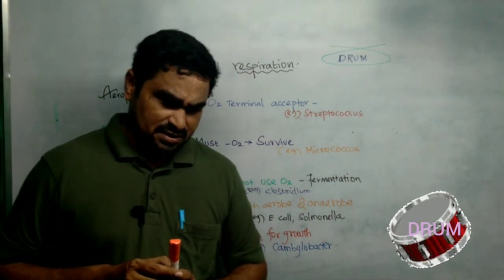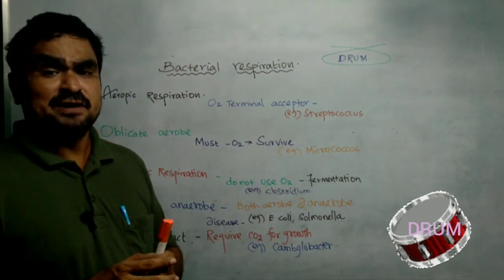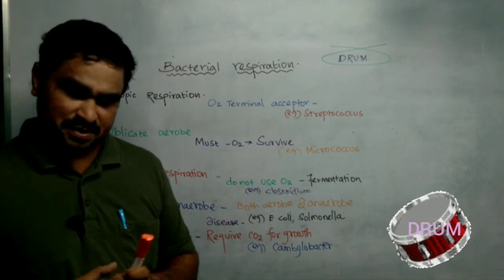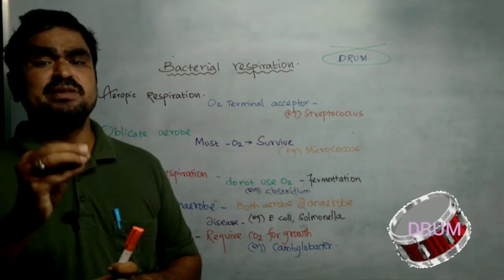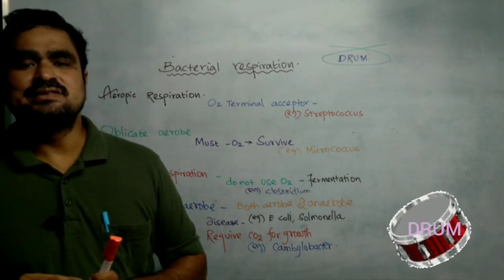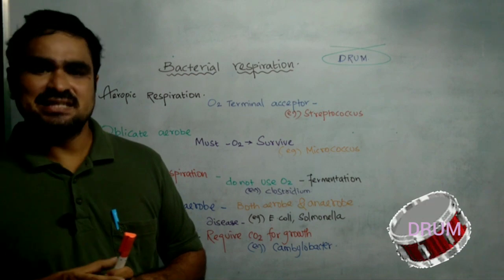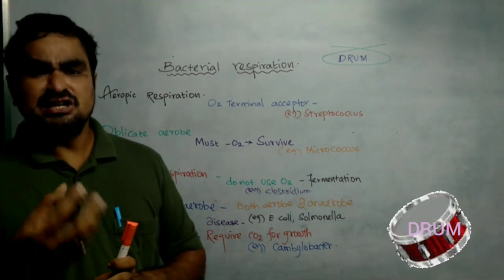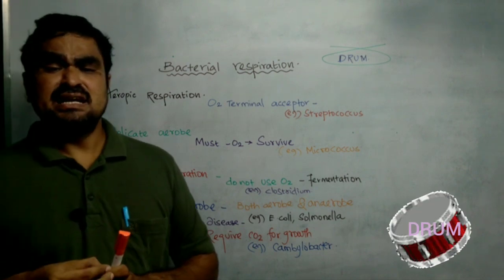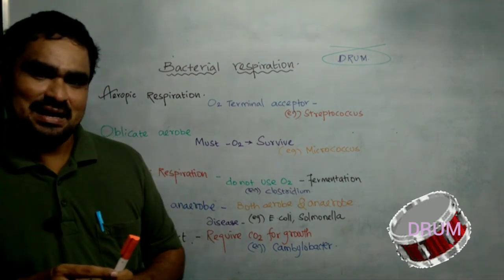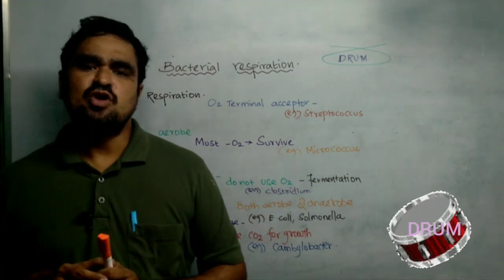The fourth one is facultative anaerobes. In facultative anaerobes, the bacteria can perform both aerobic and anaerobic respiration. In the presence of oxygen, they perform aerobic respiration; in the absence of oxygen, they perform anaerobic respiration. In anaerobic respiration, they can cause severe diseases by creating poisonous proteins called toxins. Examples of facultative anaerobes are Escherichia coli and Salmonella.